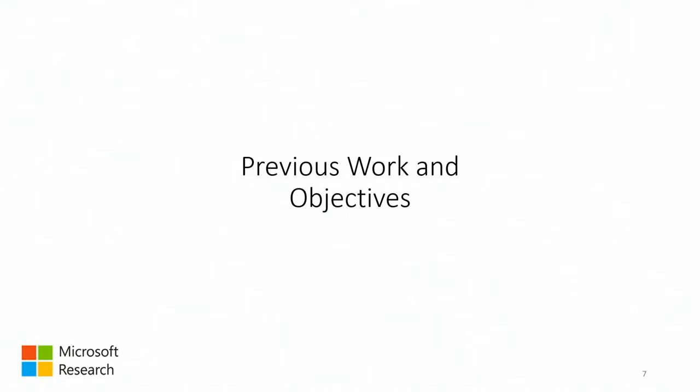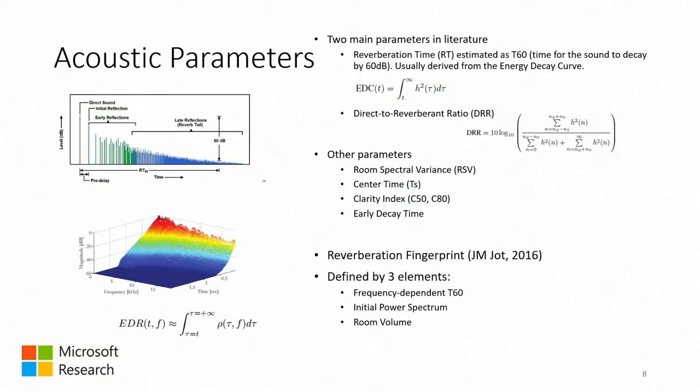Blind estimation means we have no prior knowledge of the space, no prior knowledge of the sources around the listener, or the geometry of the room. Previous work on acoustic parameters has mostly focused on two main parameters: the reverberation time T60, and the DRR — the direct-to-reverberant ratio.